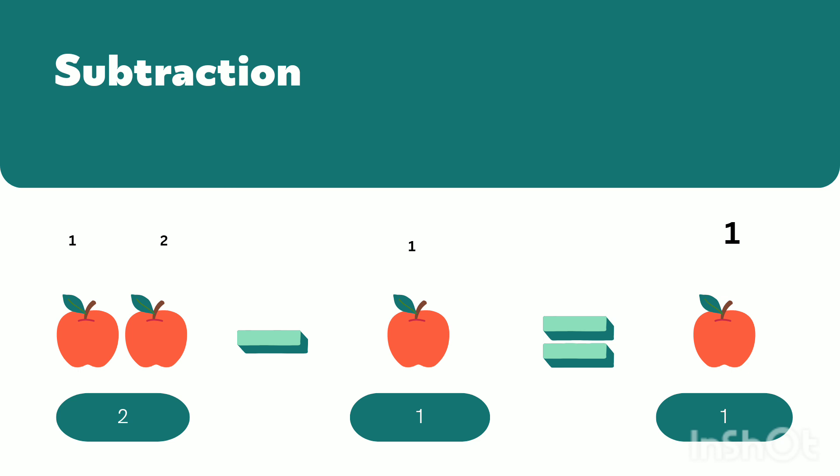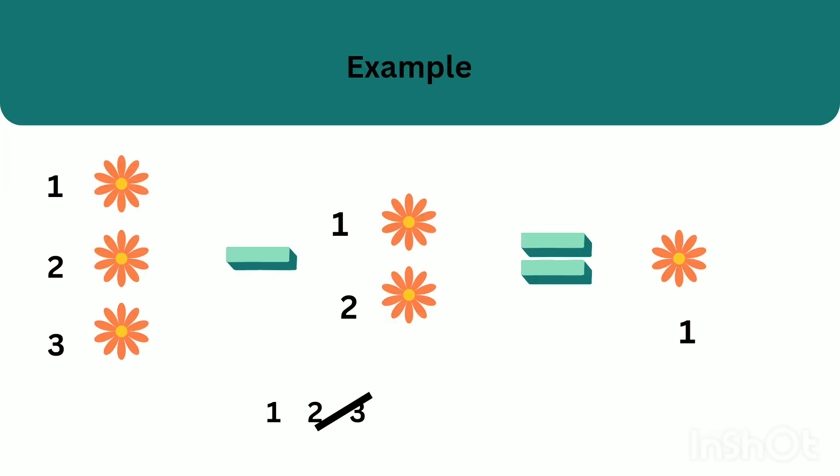Two minus one gives one — the remainder is one. If you take one apple from two apples, we get only one apple. Two minus one gives one. Next, three minus two gives one. Let's count: one, two, three. We have three flowers, and if we take two